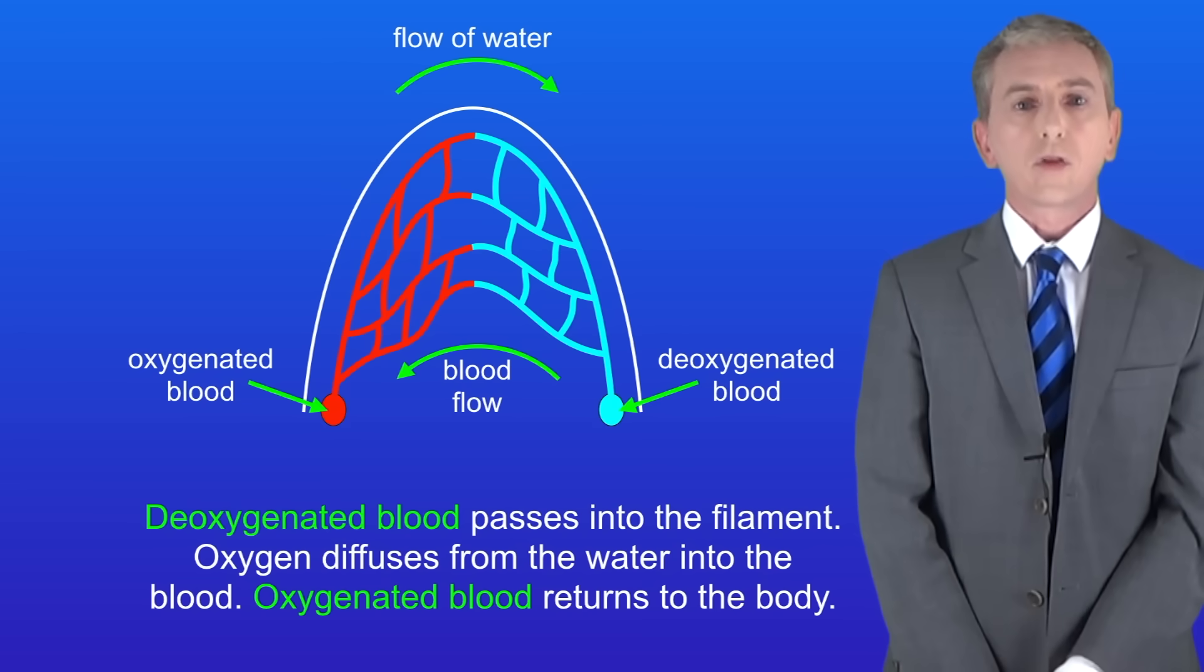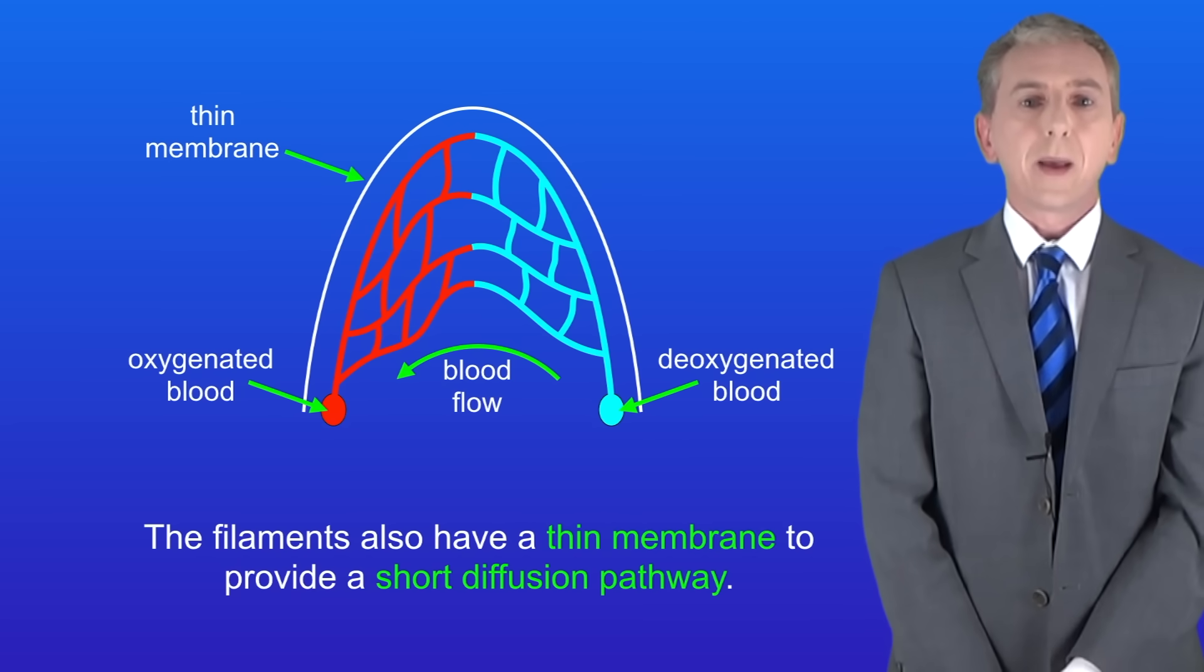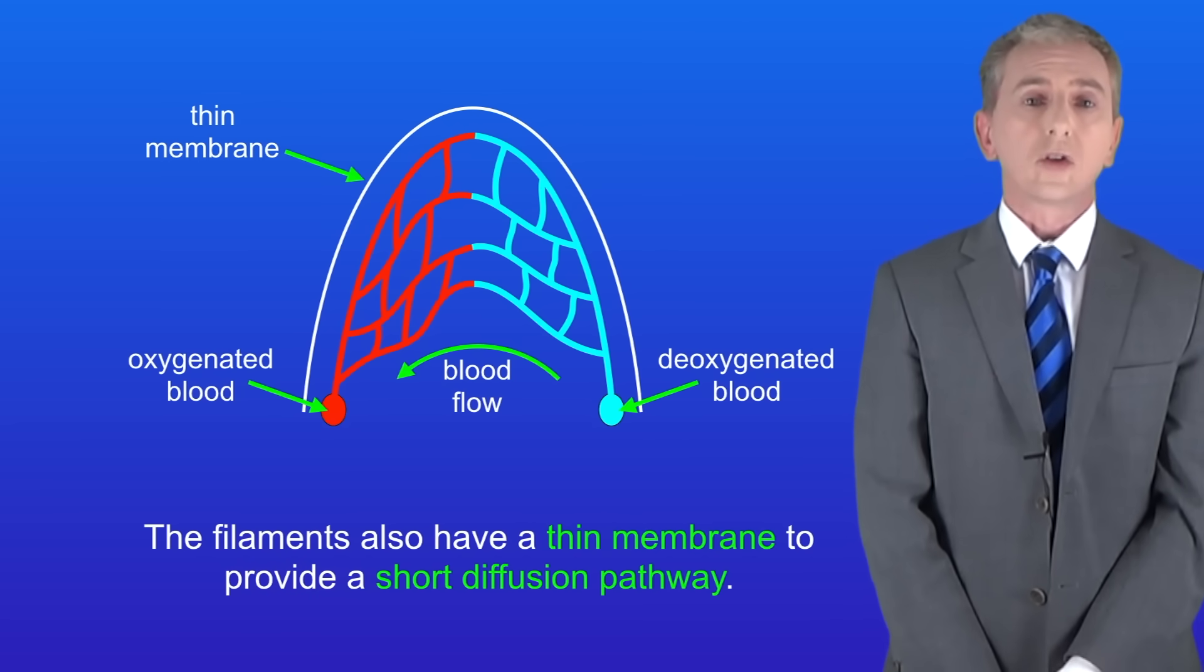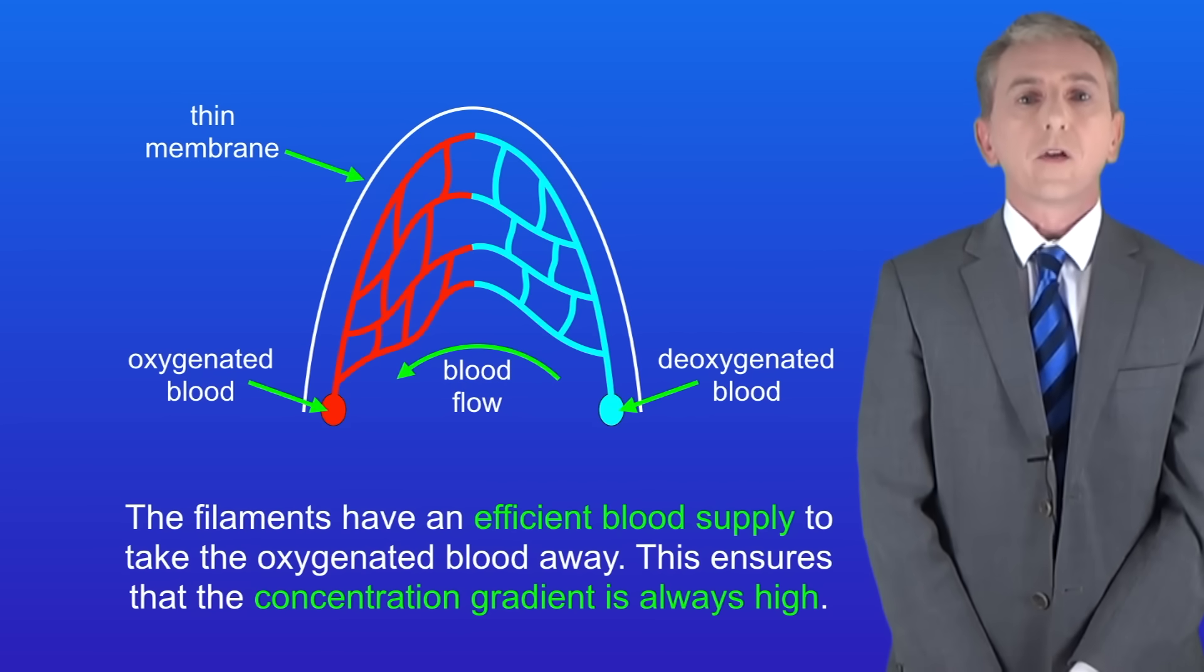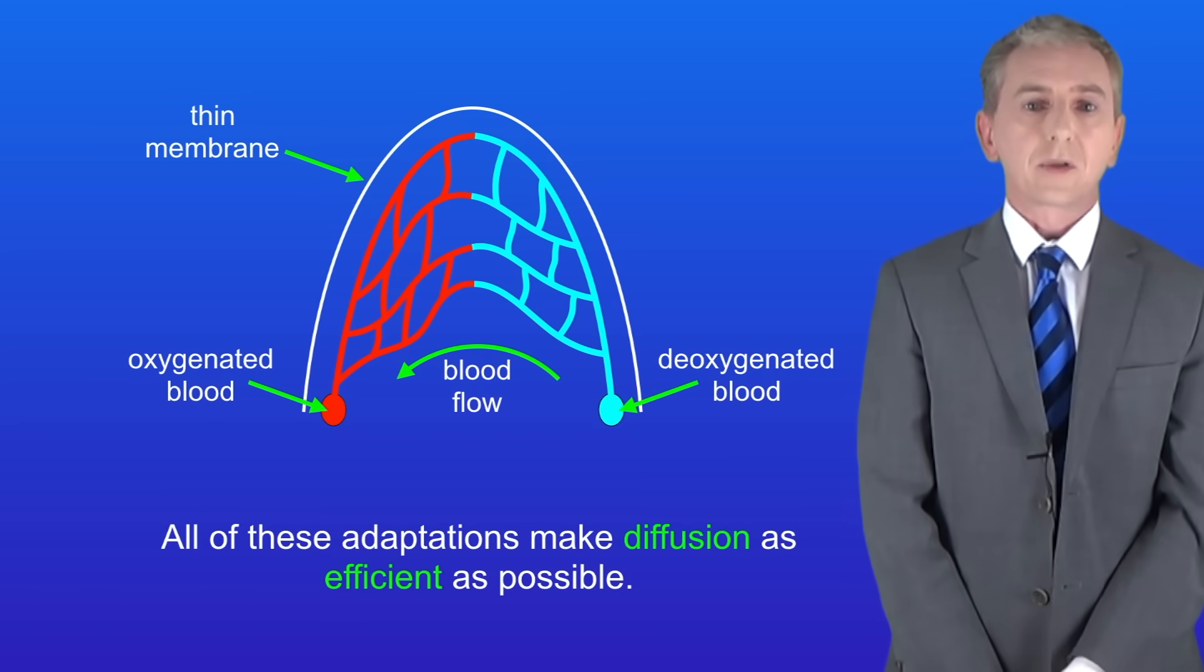The filaments have got three adaptations to increase the rate of diffusion. Firstly, the filaments give the gills a massive surface area. The filaments also have a thin membrane to provide a short diffusion pathway. The filaments have an efficient blood supply to take the oxygenated blood away. This ensures that the concentration gradient is always high. So all of these adaptations make diffusion as efficient as possible.